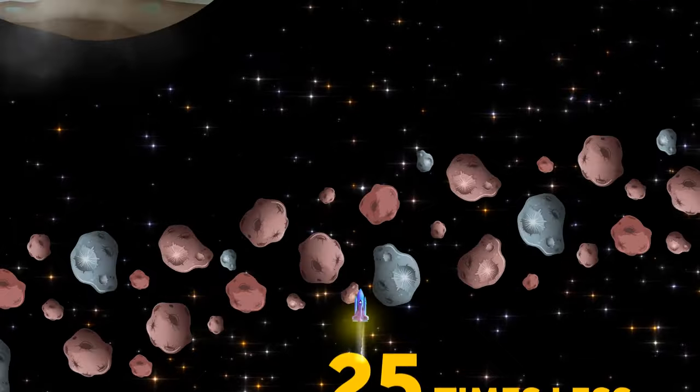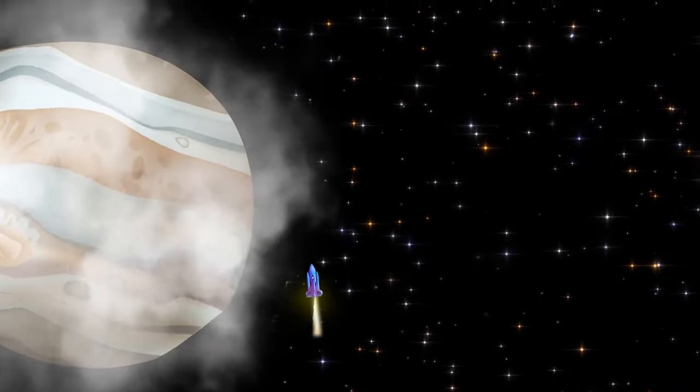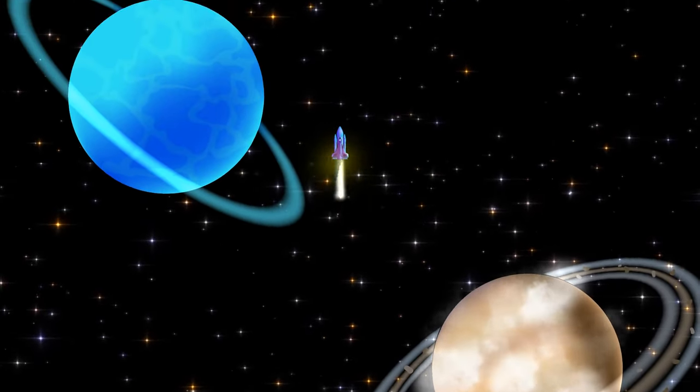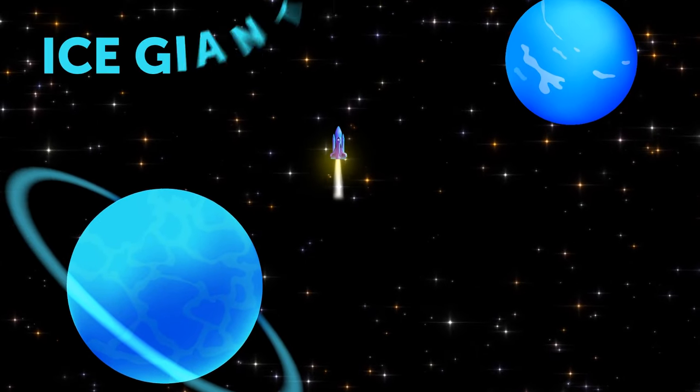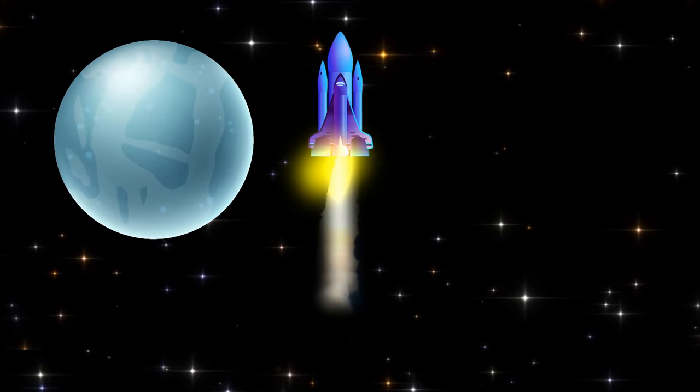Next, we pass gas giants Jupiter and Saturn. These are the largest planets in the solar system. They're also the heaviest, even though they don't have a solid surface. Then, we travel by Uranus and Neptune. They're called ice giants.